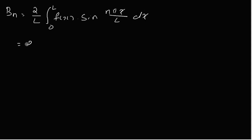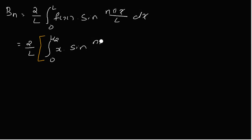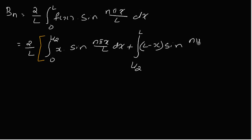This equals (2/L) times the integral from 0 to L/2 of x·sin(nπx/L) dx, plus the integral from L/2 to L of (L minus x)·sin(nπx/L) dx, corresponding to the two pieces of the initial condition function.